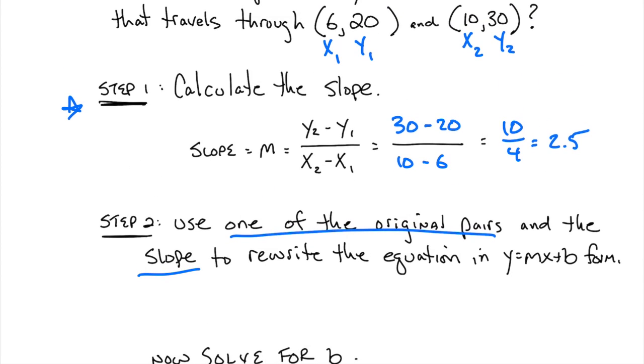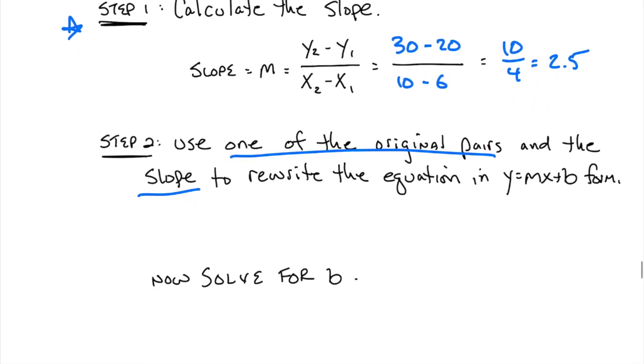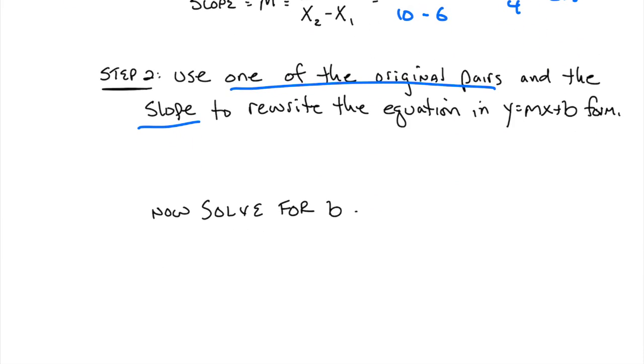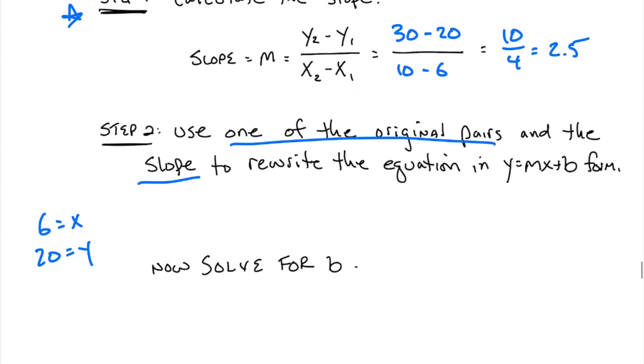I'm going to pick this one. It doesn't really make any difference. 6 and 20 or 10 and 30. You're allowed to pick either one and it doesn't make any difference which one you pick. So I'm picking 6 and 20. And what that means is I'm choosing 6 for x and 20 for y.